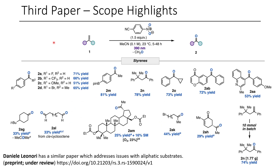They also have decent functional group tolerance overall in their scope. Some highlights of their scope: there are some styrene derivatives, and some interesting functional groups were well tolerated, such as the cyclopropane. Here you can see an electron-rich double bond which was tolerated, with the styrene preferred. There are other groups which might potentially get cleaved by something like ozone but were tolerated in this case. The aliphatic examples have lower yields, but it's important to remember that ozone would also be really harsh and often give terrible yields for some complex examples.